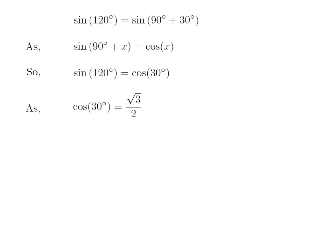We know the value of cosine of 30 degree is equal to square root of 3 upon 2. So, sine of 120 degree is equal to square root of 3 upon 2.